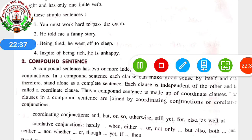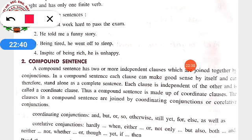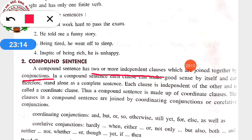Secondly, compound sentences. A compound sentence has two or more independent clauses that are joined together by conjunctions. In a compound sentence, each clause can make good sense by itself and can therefore stand alone as a complete sentence. Each clause is independent of the other and is called a coordinate clause. Thus, a compound sentence is made up of coordinate clauses joined by coordinating conjunctions or correlative conjunctions.